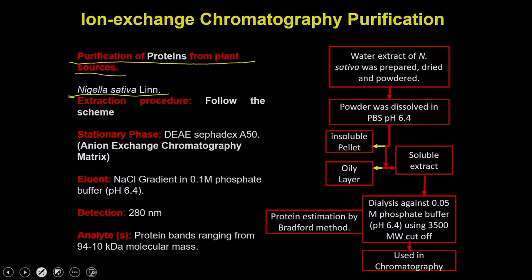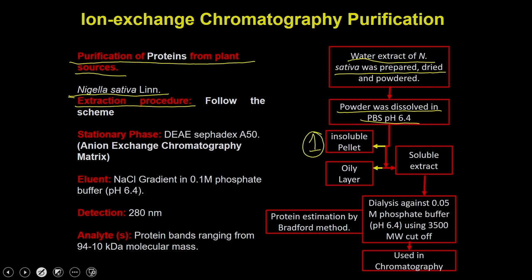In the first step you have to perform extraction. In the extraction procedure, you first make a watery extract of the plant, dry it and keep the powder, then take a suitable amount of powder and dissolve it into PBS at pH 6.4. Once dissolved and vigorously mixed, you get three fractions: an insoluble pellet that settles down, an oily layer on top, and a soluble extract as fraction three.